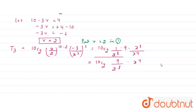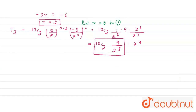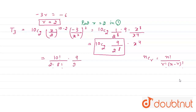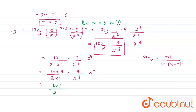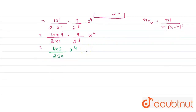Now we have to find the coefficient of x⁴. Using the formula nCr = n! / (r! · (n−r)!), we get 10C2 = 10! / (2! · 8!) = 45. So the coefficient becomes 45 · 9 / 2^8 = 405 / 256. Wait — simplifying further: 10C2 · 9 / 2² = 45 · 9 / 4 = 405/4. Therefore the coefficient of x⁴ is 405/256.